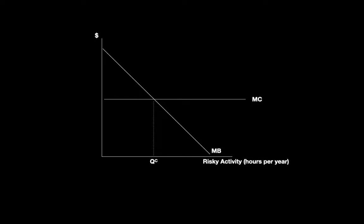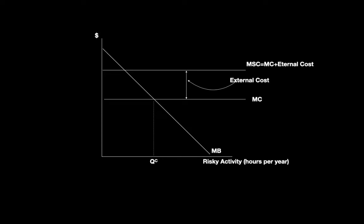The problem is the marginal cost curve here does not represent all the costs of playing lawn darts. You usually play with other friends, and you joining the game increases the probability that one of them is hurt. There is an external cost of you playing lawn darts. In other words, you are causing a negative externality. The actual marginal cost of you playing lawn darts includes the cost to you and the cost you impose on others. The true optimum is Q star, which is less than QC. Our goal with tort law is for you to internalize the externality you impose on others.